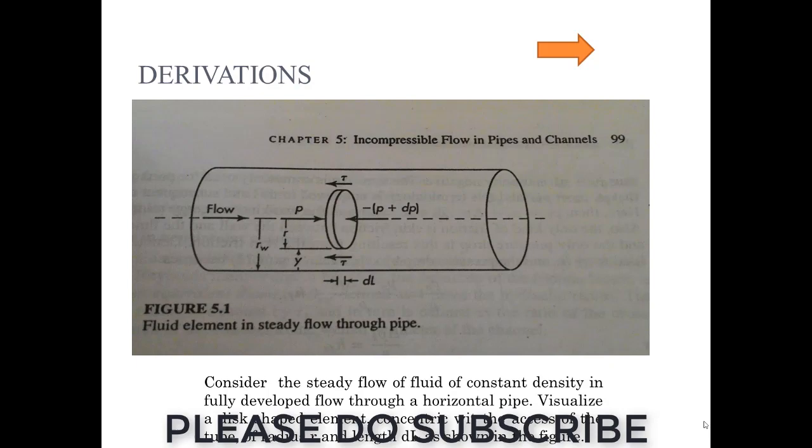You can see we have taken a small element on which there is a pressure that is being acted from one side which is P, and from other side it is P plus dP, the variation in the pressure.